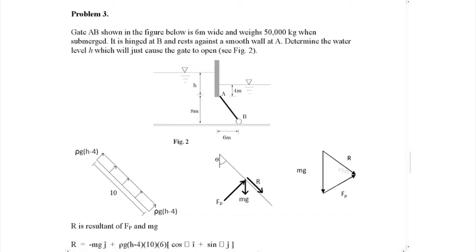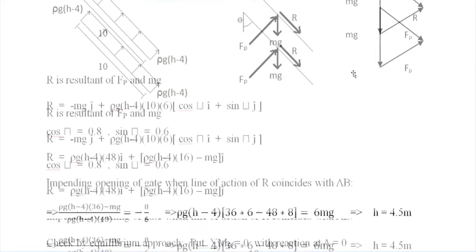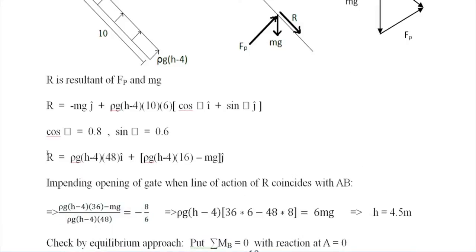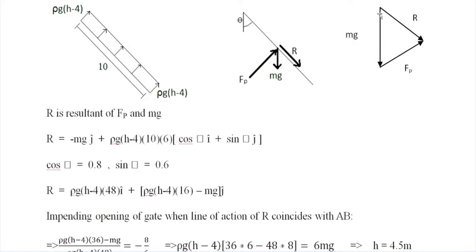The unknown is H. Since theta is known, you can decompose the resultant R into two parts: one from Fp (pressure) and one from the weight. The resultant of these two must be parallel to the gate. Using this triangle-rule approach, you get R and ultimately the answer H = 4.5 meters, because theta is known and can be computed.